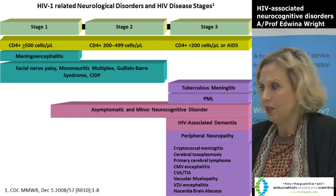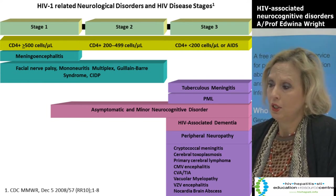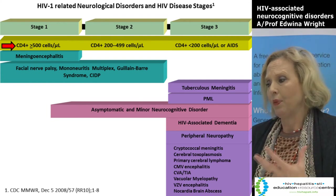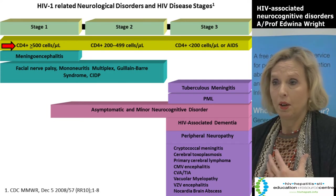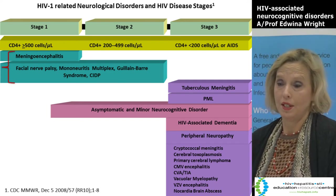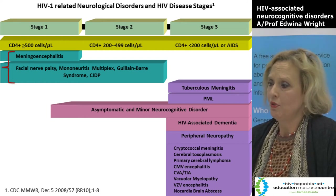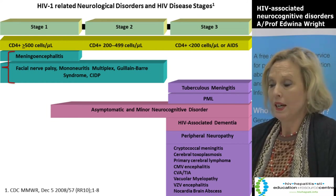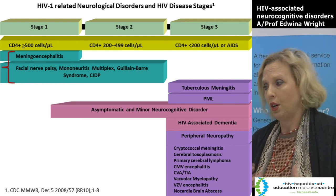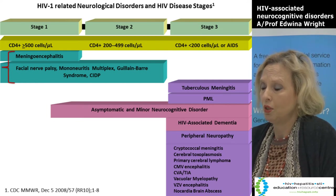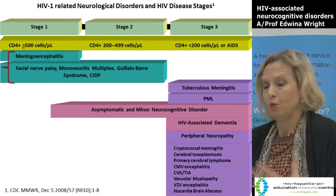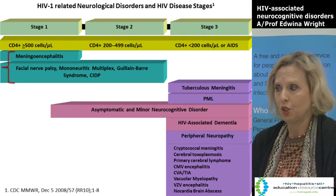In stage 1, individuals have relatively high CD4 cell counts over 500, and they may experience an encephalitis or meningitis, typically around the time that they seroconvert with HIV. Individuals with these CD4 cell counts may occasionally also develop a facial nerve palsy or other nerve-based problems including Guillain-Barré syndrome. About 5 to 7% of people will develop a neurological problem at the time of seroconversion.